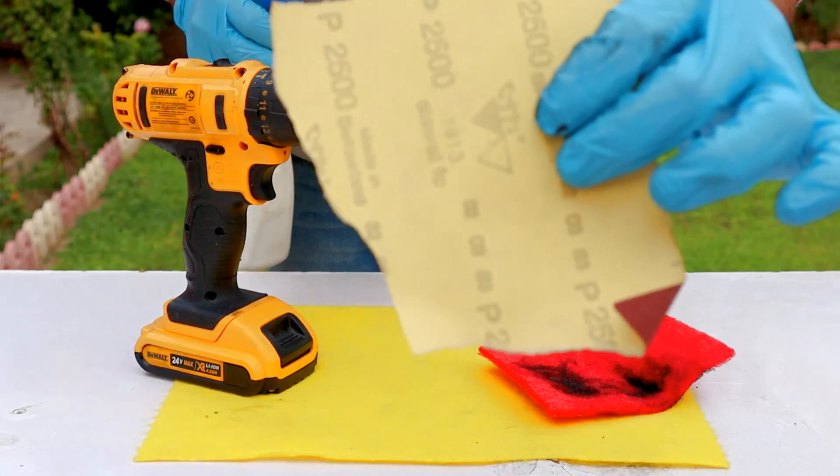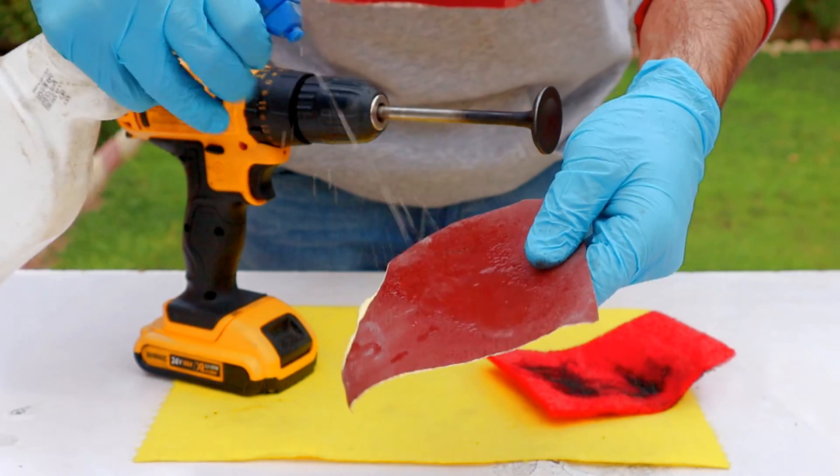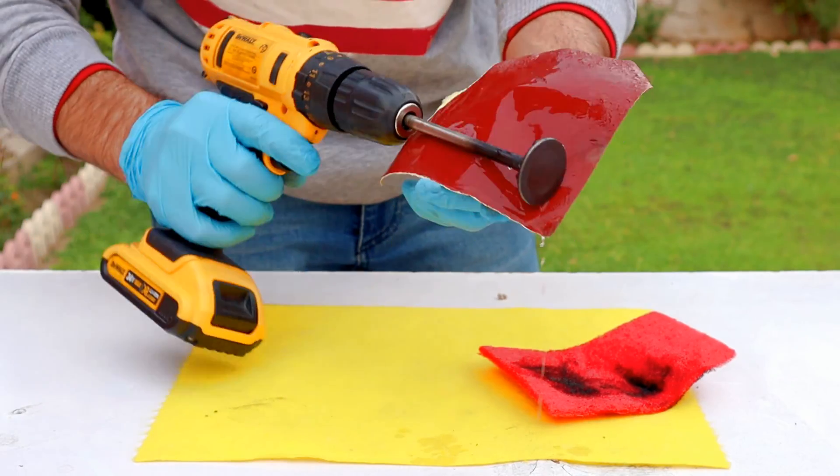Next I like to wet sand it with a 2500 grit sandpaper and never use aggressive sandpaper lower than 1000 grit.